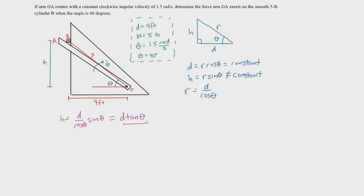This equation maps out the distance the cylinder has traveled upward. Our goal is to find the acceleration of the cylinder so we can relate it to the forces acting on the cylinder by Newton's second law. The most complicated part is that we have to take time derivatives of H with respect to theta, and we must apply the chain rule since H is not explicitly dependent on time.